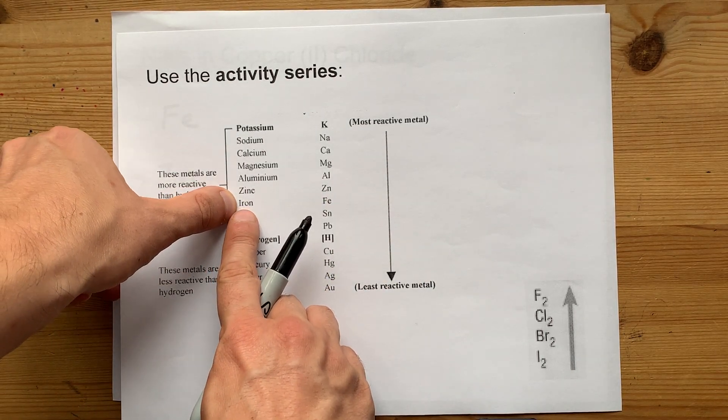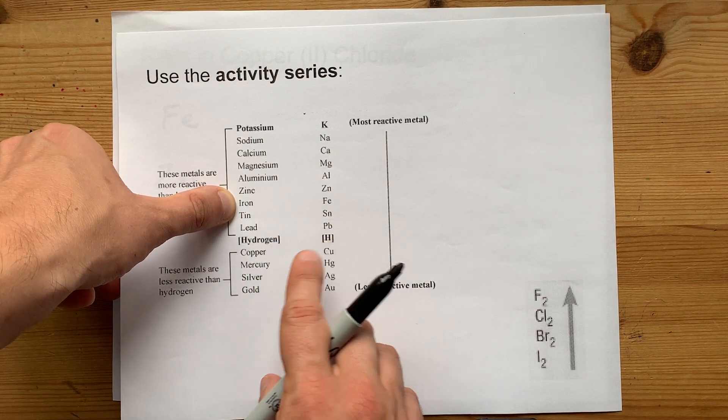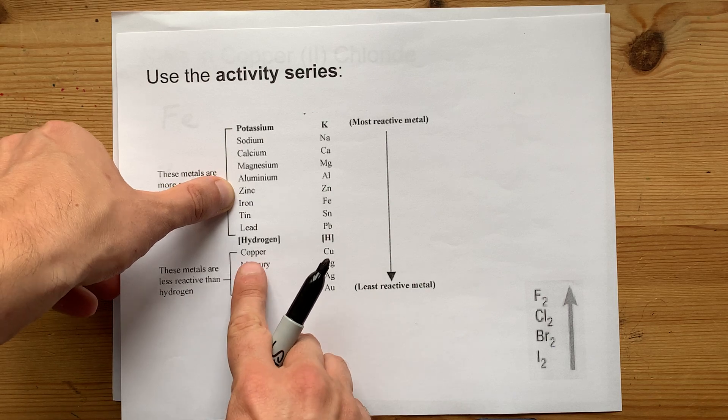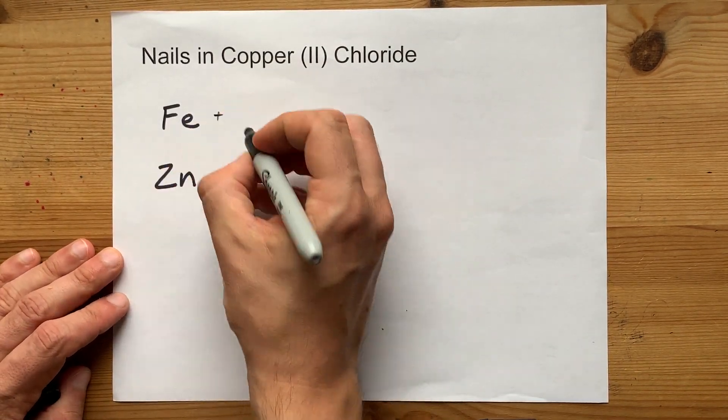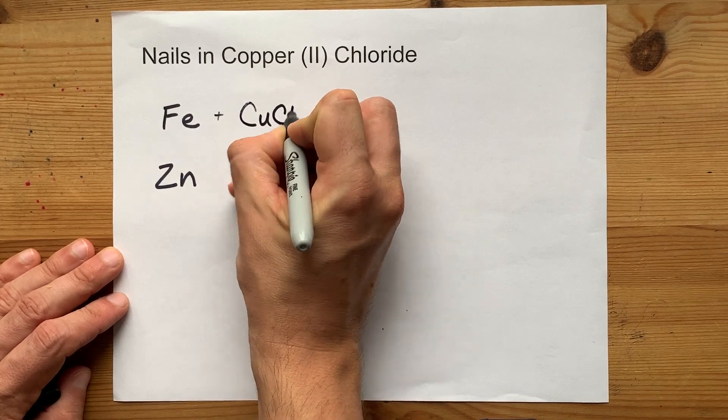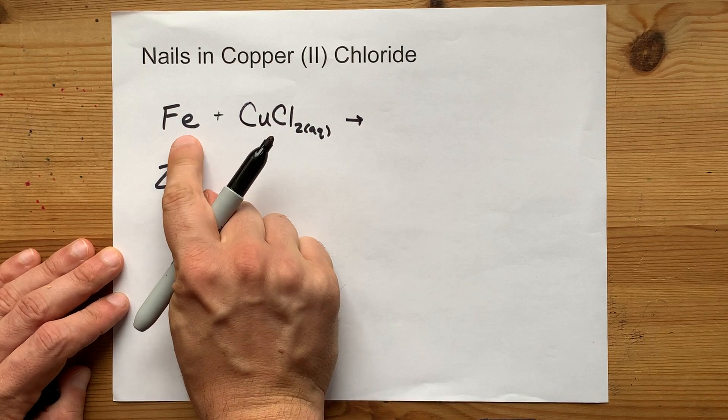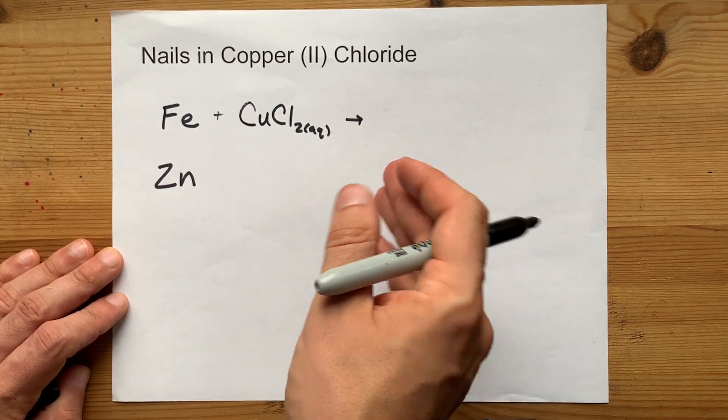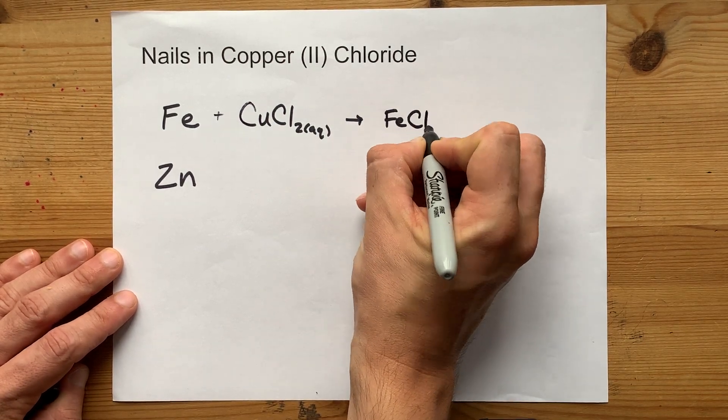Iron is more reactive as a metal than copper, and zinc is also more reactive than copper. So if you were to drop an iron nail inside of copper-2-chloride solution, the iron would displace the copper. This is a single displacement reaction. You would end up with FeCl2.